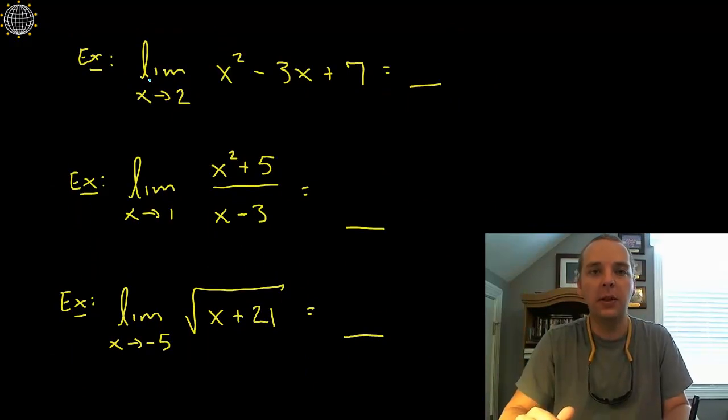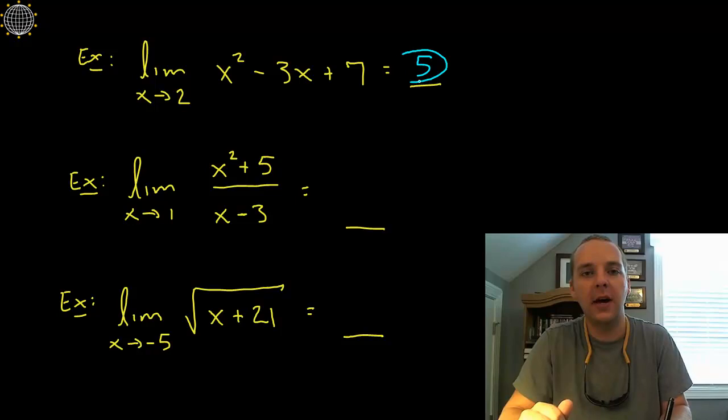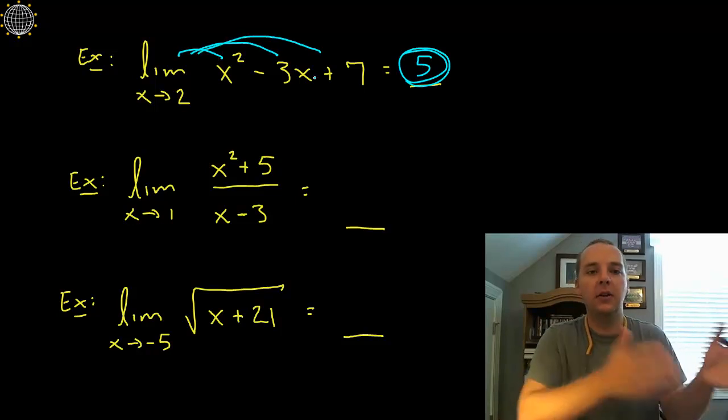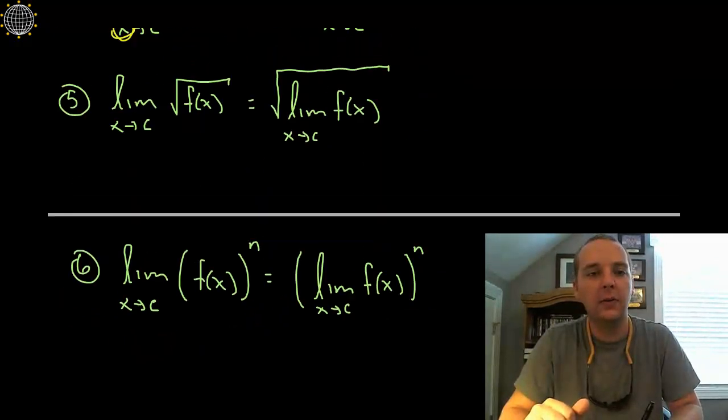Let's do the first one. Limit as x approaches 2 for x squared minus 3x plus 7. We'll evaluate this analytically which means we'll just try to plug in 2. 2 squared is 4 and 2 times 3 is 6. So 4 minus 6 is negative 2 and negative 2 plus 7 makes 5. So you see what we did there, we just distributed the limit and took the limit of all 3 expressions using that first rule.